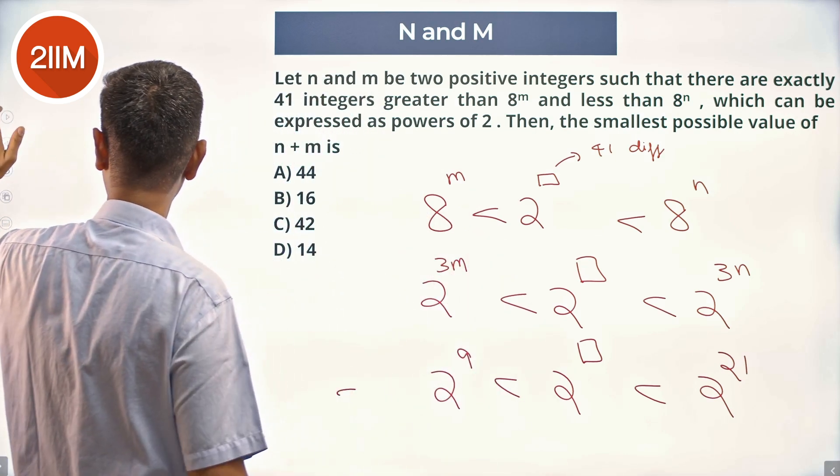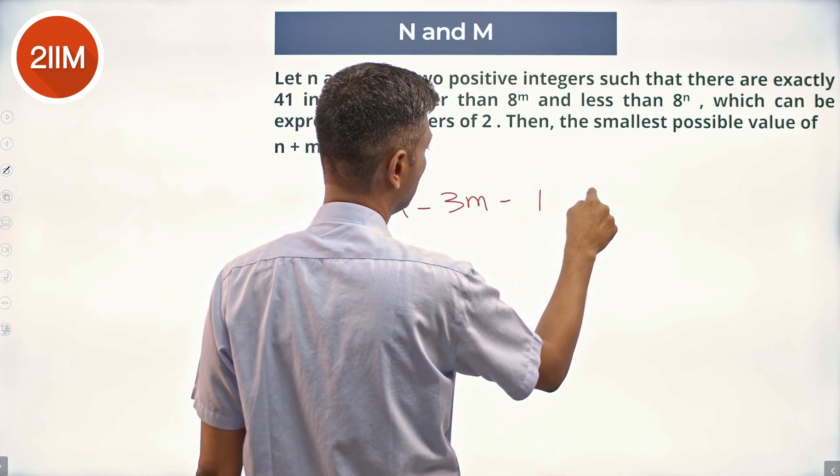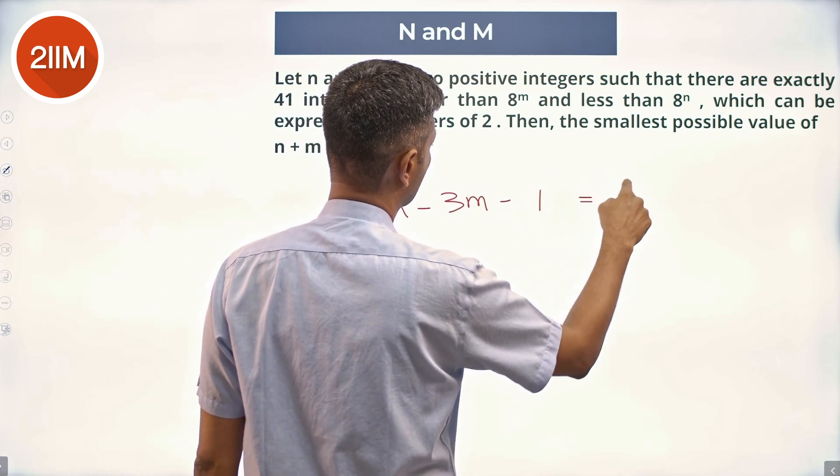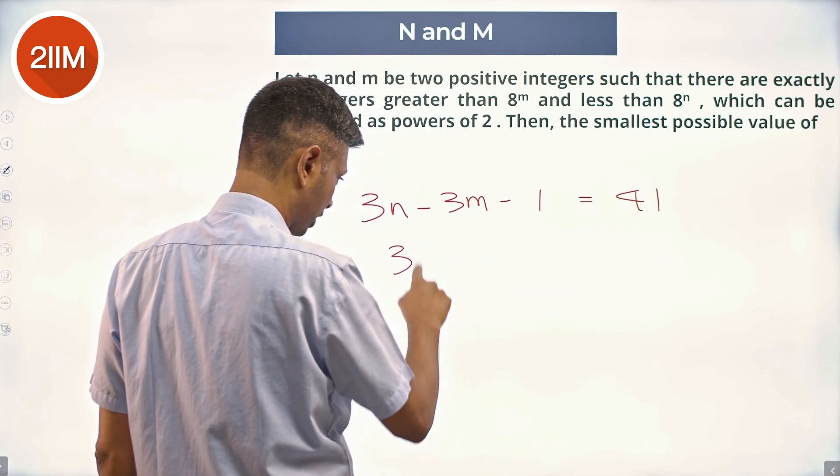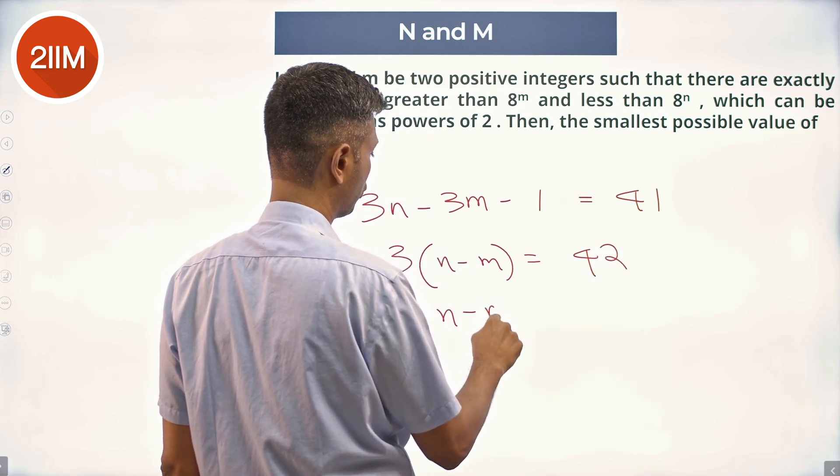Now we get quite beautifully 3n minus 3m minus 1 equals 41, or 3 times n minus m is 42. n minus m is 14.